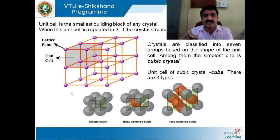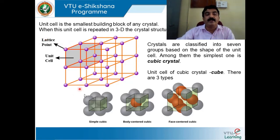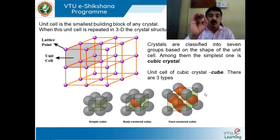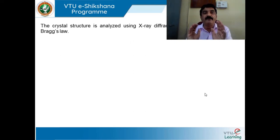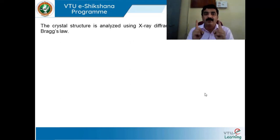The basic classification of crystals includes many systems — seven systems, fourteen classes, thirty-two groups. The simplest is SCC (simple cubic), where each corner is occupied by one lattice point. If there is one more at the center, it is BCC (body-centered cubic). If there is one atom at the center of each face in addition to corners, it is FCC (face-centered cubic). To analyze the crystal structure using X-ray diffraction, Bragg's law is essential.